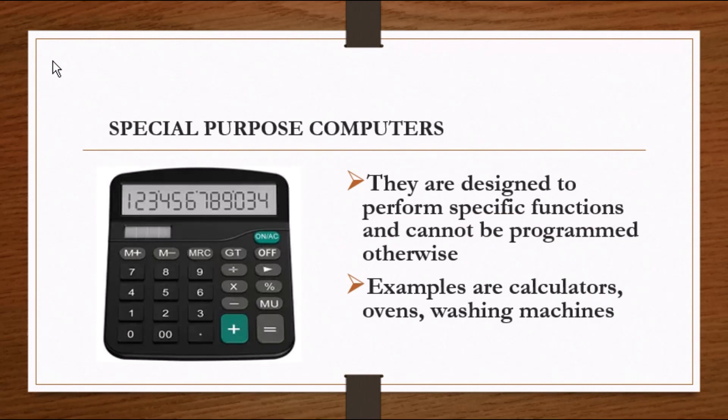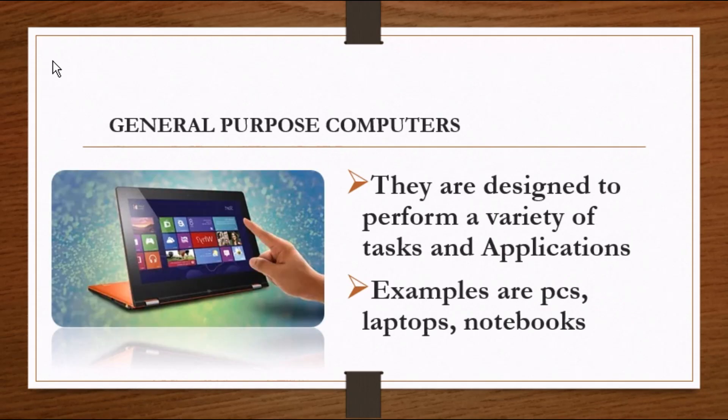These are computers designed only to meet the requirements of a particular task or application. In simple terms, they are designed to perform specific functions and cannot be programmed otherwise. Good examples of these computers include calculators, ovens, and washing machines. The next type is general purpose computers.